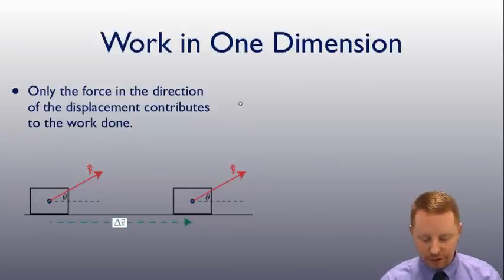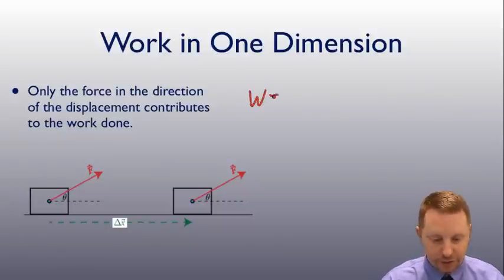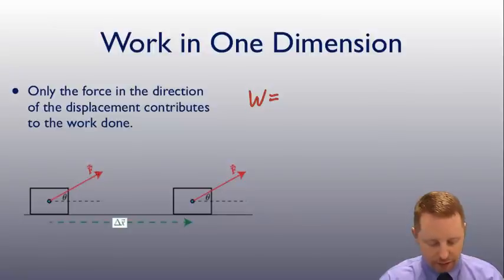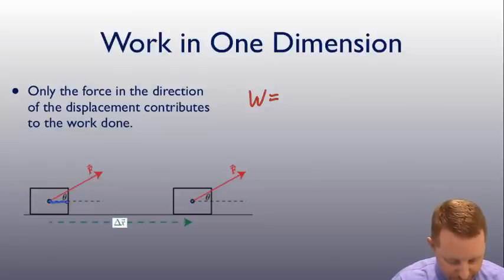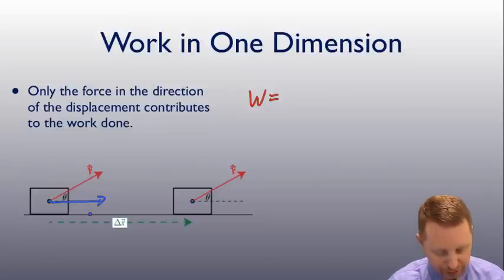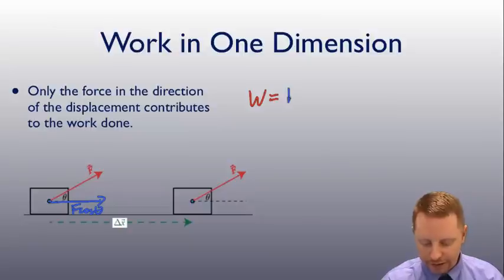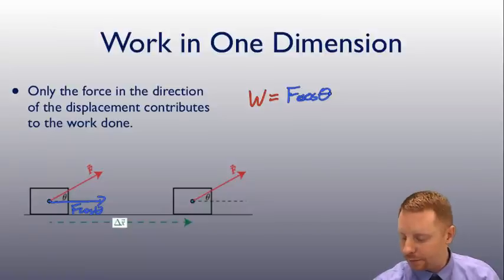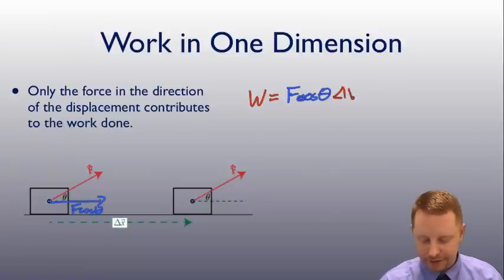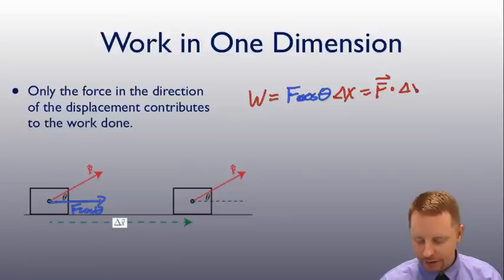we could calculate the work done as the component of force in the direction of the displacement, which is F cos theta. So work is F cosine theta times the displacement delta x. Or we could write that as the force vector dotted with delta x, our displacement vector there.